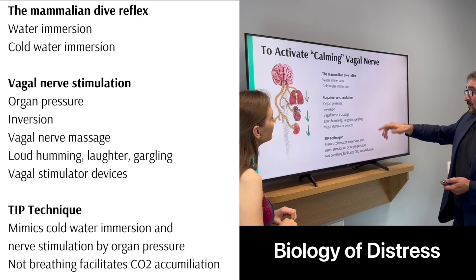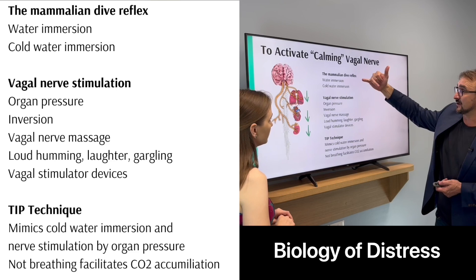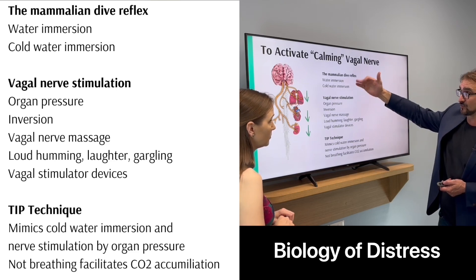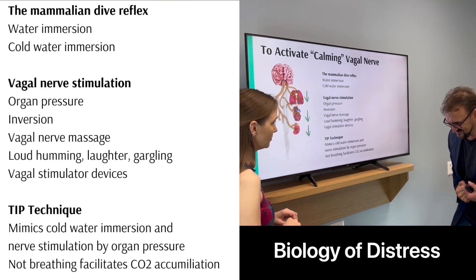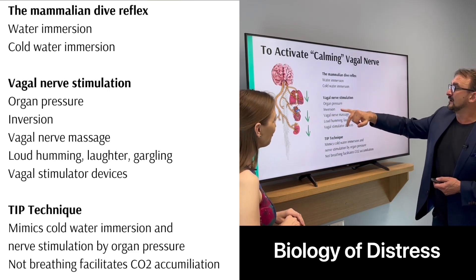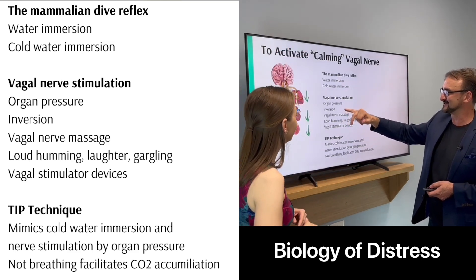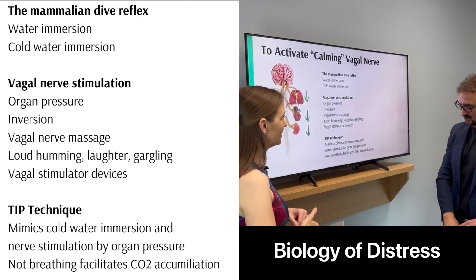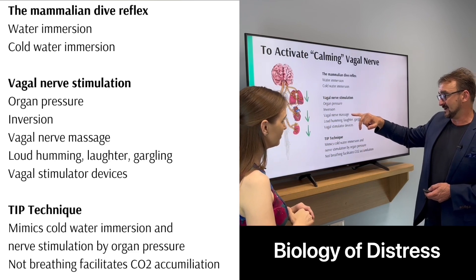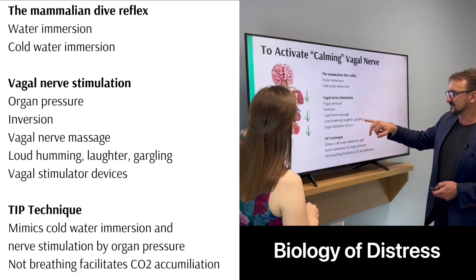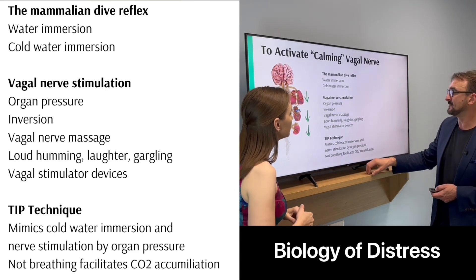How do we activate this calming vagal nerve? There are all kinds of ways. We want to activate what's called the mammalian dive reflex — so water immersion, especially cold water immersion, is very good for that. Or we can stimulate the nerve directly by applying pressure to our organs, like when you tighten and bear down. Inversion — those inversion tables — apparently does it too. Even having your legs up the wall at a 90-degree angle. Parts of the vagal nerve can be accessed and massaged. Humming, laughter, and gargling also work because the nerve actually goes around the larynx before it goes to the lungs.